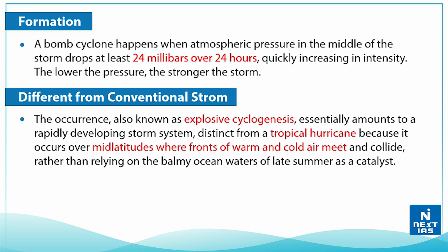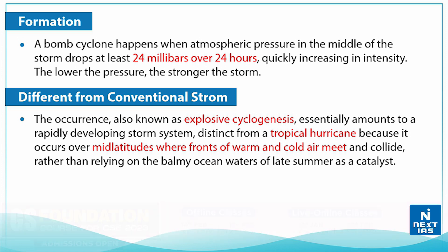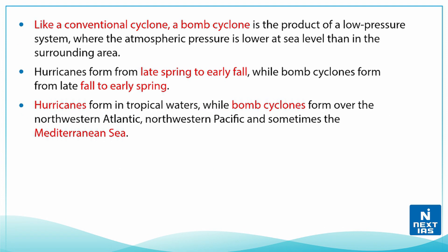Now let's discuss how the bomb cyclone differs from a conventional storm. Also known as explosive cyclogenesis, it is a rapidly developing storm system distinct from a tropical hurricane because it occurs over the mid-latitudes, where fronts of warm and cold air meet and collide, rather than relying on ocean waters of late summer as a catalyst. Like a conventional cyclone, a bomb cyclone is the product of a low pressure system where atmospheric pressure is lower at sea level than in the surrounding area.